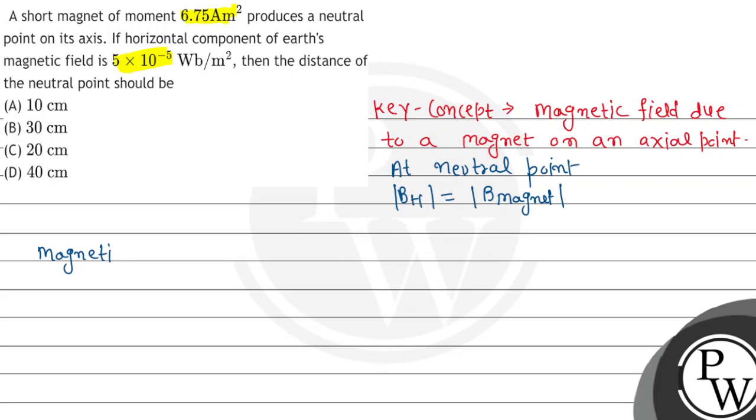The magnetic field due to a magnet on an axial point is given by B_magnet = μ₀/4π × 2M/d², where M is 6.75 and d is the distance squared.